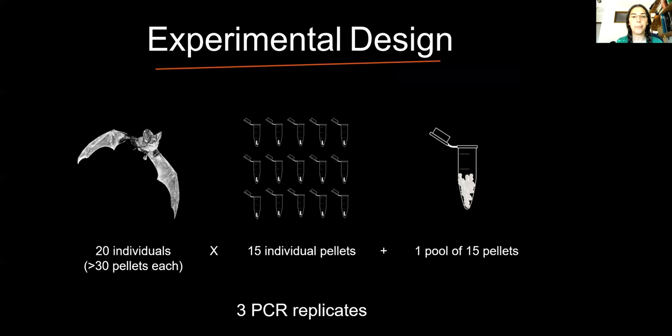We came up with an experiment where we sampled 20 bats, extracted DNA from 15 individual pellets and then also added a pool of 15 pellets. We selected bats that produced more than 30 pellets each and individually extracted 15 and pooled the other 15. We then did three PCR replicates of these 16 samples. The idea was trying to understand what should we replicate: individuals, pellets, or PCRs. We were also interested in understanding the effect of pooling samples before DNA extraction.